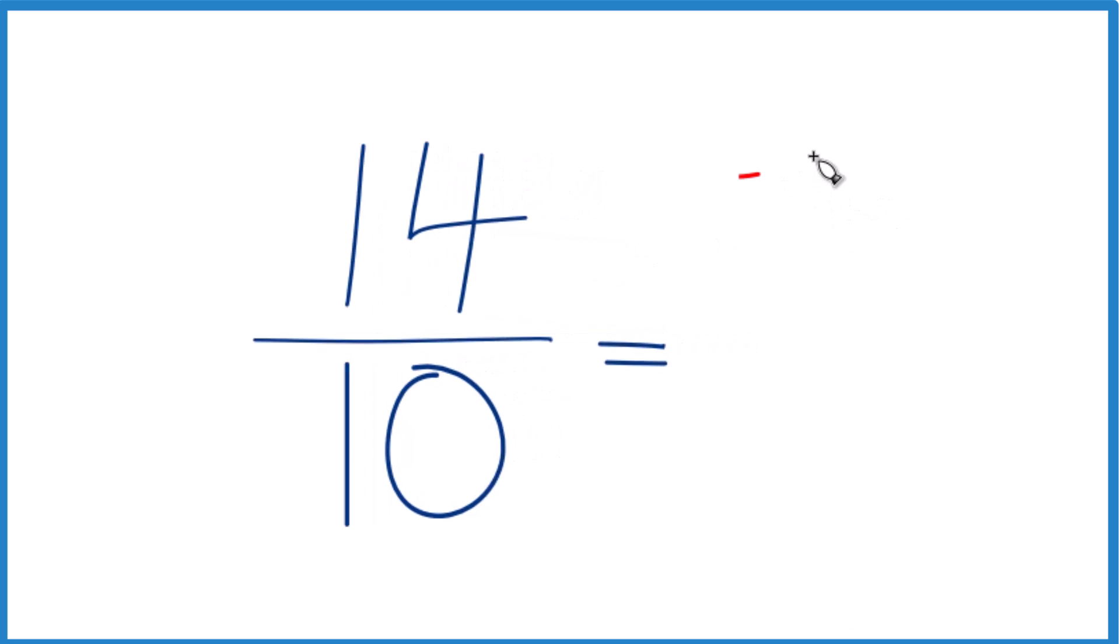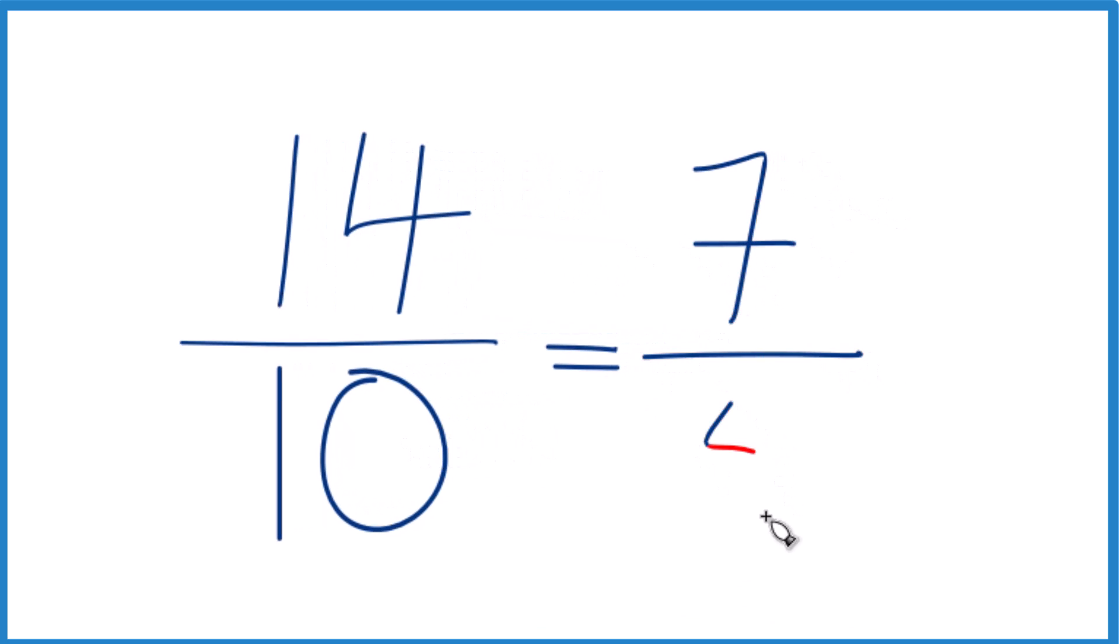14 divided by 2 is 7, 10 divided by 2 is 5, and we can't reduce this any further. This is in lowest terms. So these two fractions, 14/10 and 7/5, they're equivalent fractions. They have the same value, just written in different format.